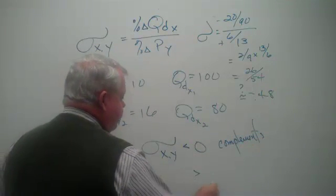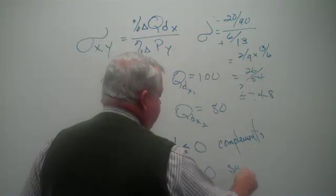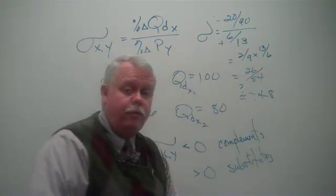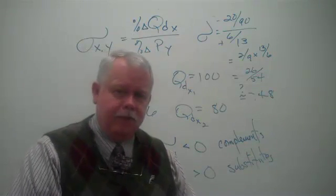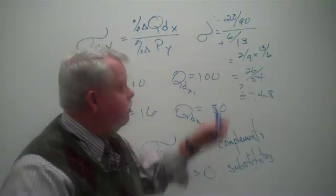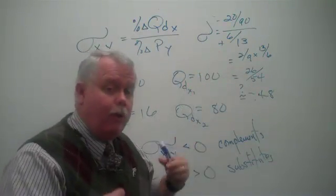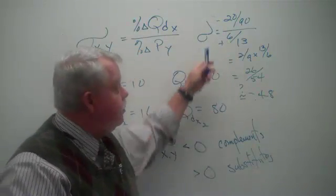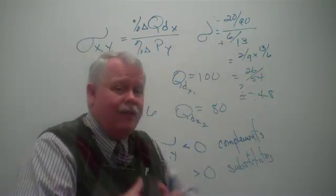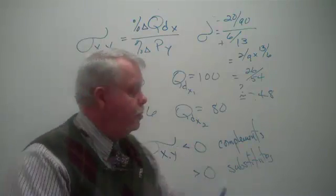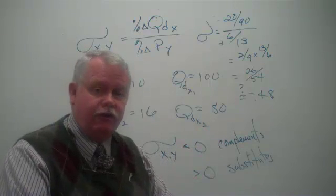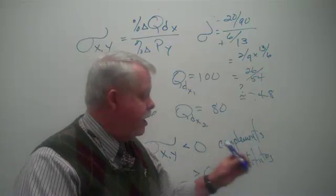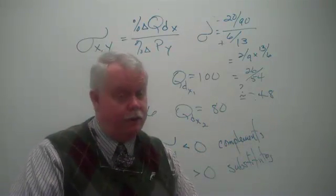When the cross price elasticity is positive, we're dealing with substitutes such as Coca-Cola and Pepsi or Ford and Chevrolets. So our cross price elasticity calculations are very straightforward, the way we've always done them. What we have to remember is to keep an eye on the sign, to determine if these goods are complements or substitutes. The important element there is the sign of the coefficient. Negative sign for complements, positive sign for substitutes.